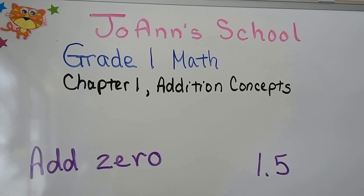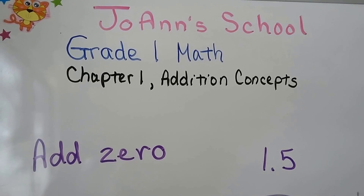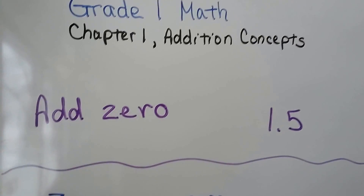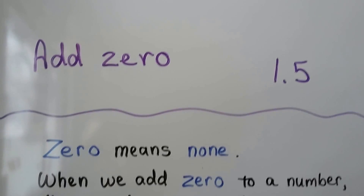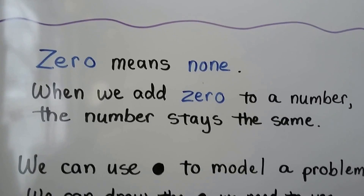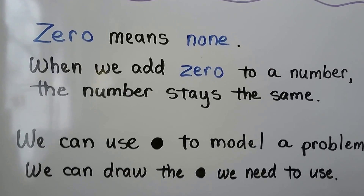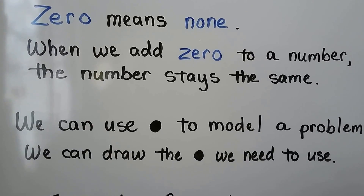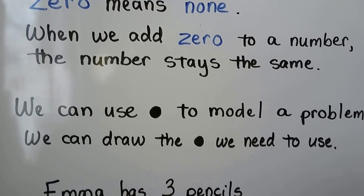Add zero. Lesson 1.5. Zero means none. When we add zero to a number, the number stays the same.